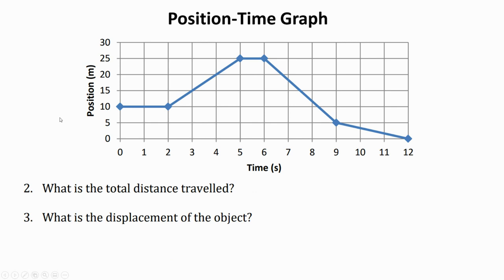What is the total distance traveled on this graph? Let's break it down leg by leg. Between zero and two seconds, I was stopped, so that's zero meters. You start 10 meters from home and end 10 meters from home — you didn't go anywhere. But between two and five seconds, I do change position. I go from 10 to 25 meters away from home. The difference is 25 minus 10, which is 15 meters.